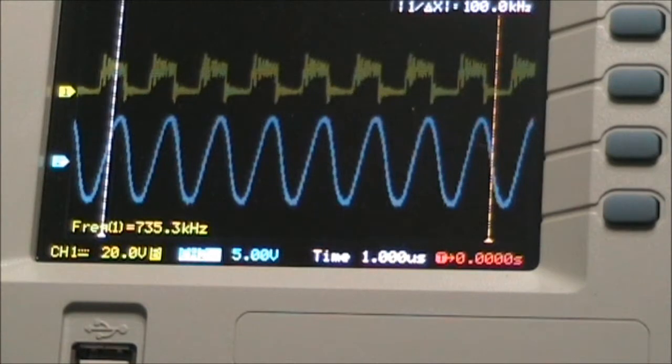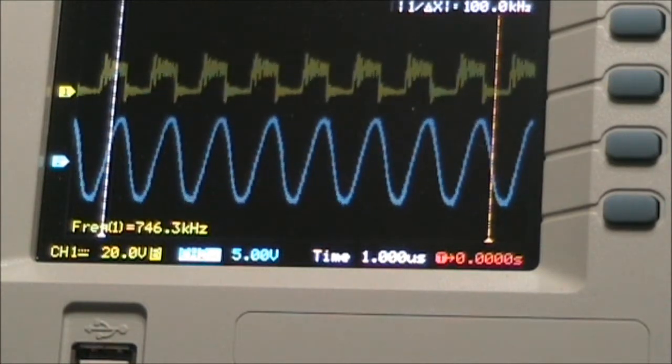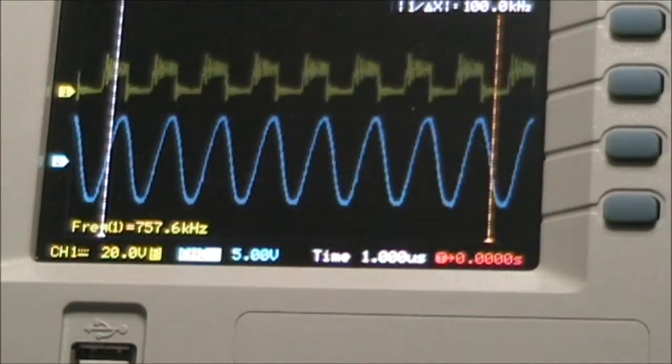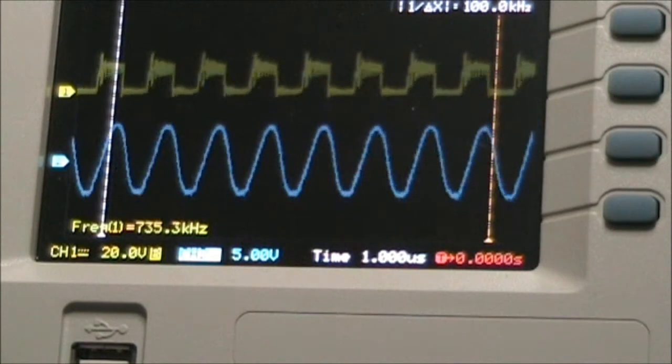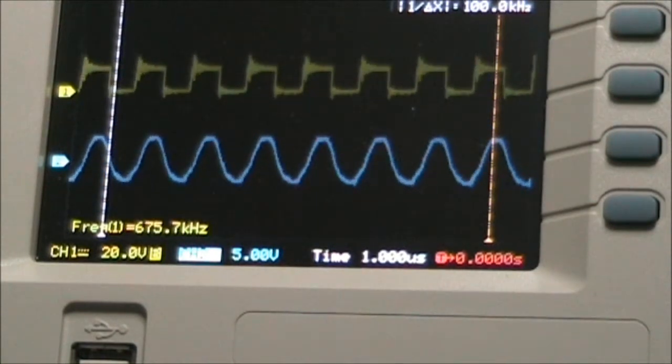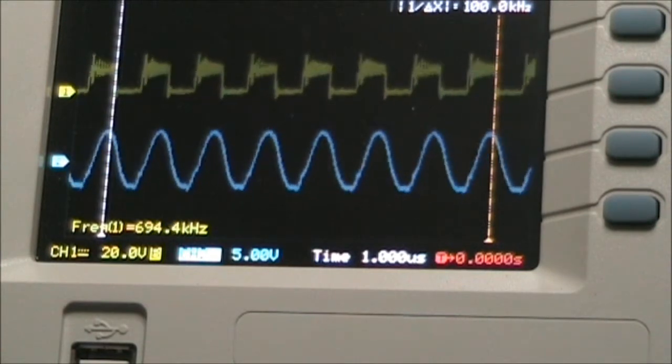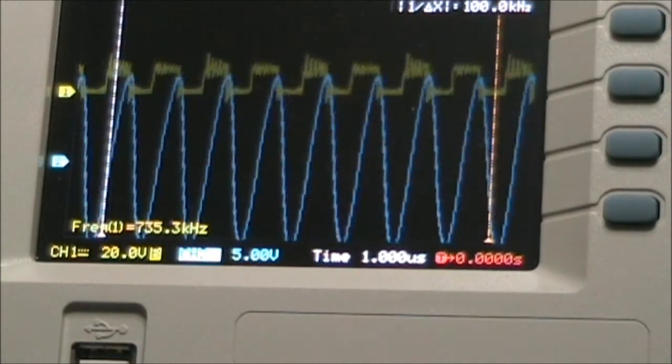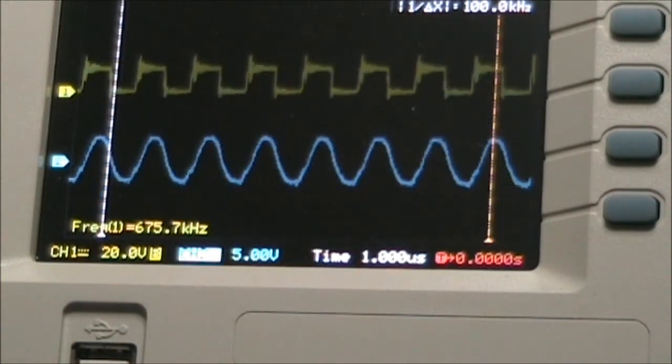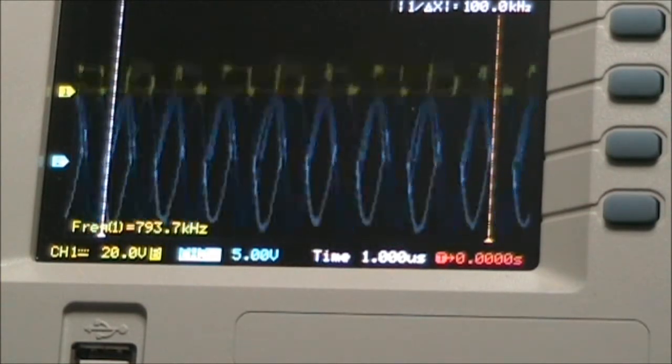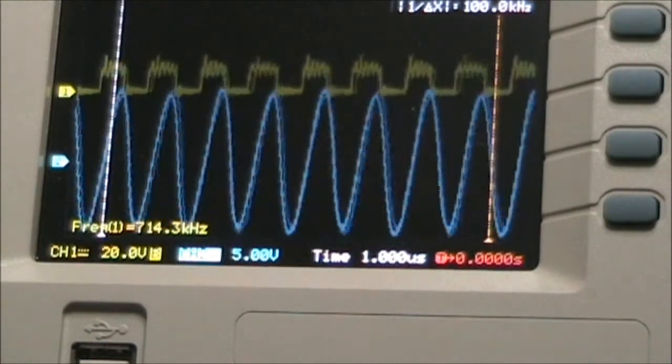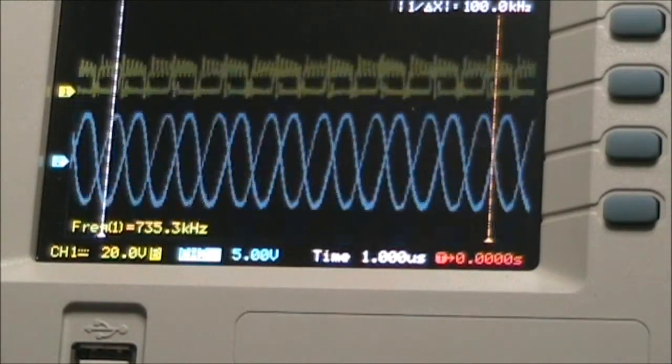You can see there what it does to the gate. The MOSFET gate. Probably the cause of the heating on the transistor. You can see there the gain up on the primary resonance.